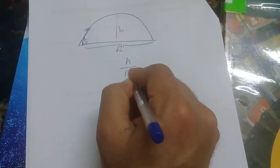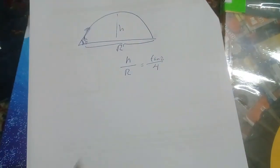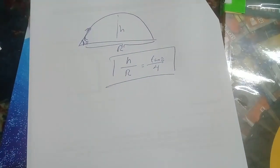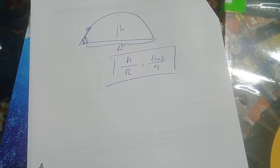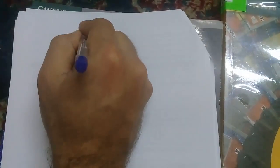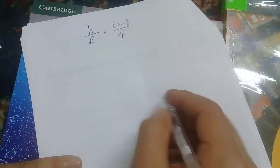The relation between them is H over R equals tan(θ) over 4. So how can we prove this relation? We will prove this relation in this video. Please follow this video and subscribe the channel for more videos. So how can we prove this relation H over R equals tan(θ) over 4?